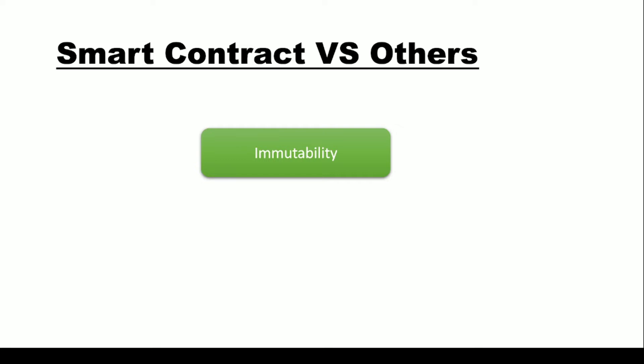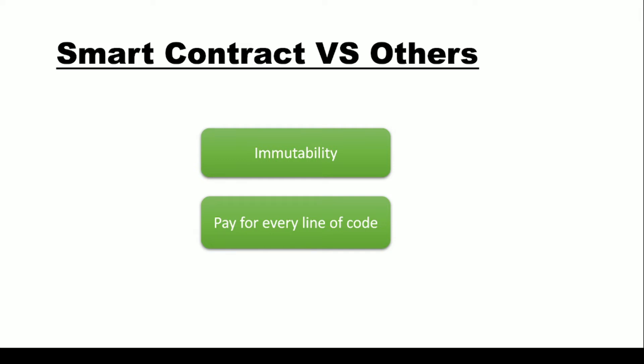The second key difference is that when creating a smart contract, you are paying for every single line of code you write. In traditional programs you don't pay per line of code, though keeping code minimal is good advice. In a smart contract, you pay for every single line. So remember these two things: first, immutability — once deployed you cannot change it; second, you are going to pay for every single line of code.